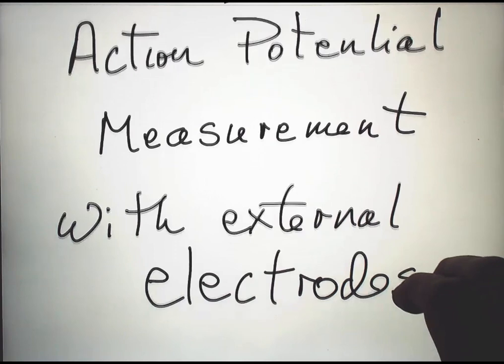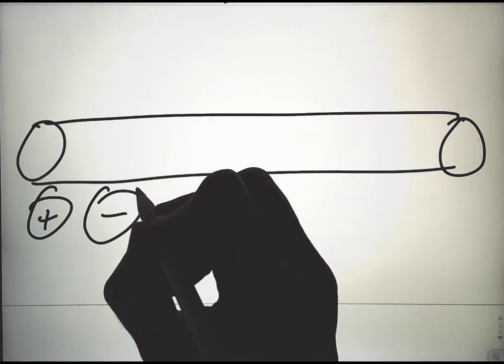What does an action potential look like if we measure it with electrodes outside an axon and at two locations? Here's an axon.